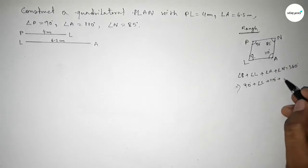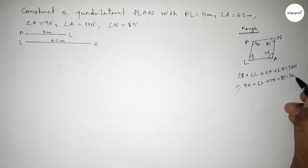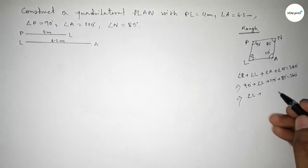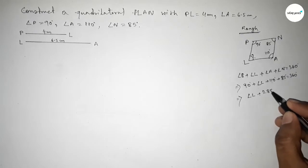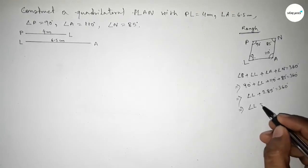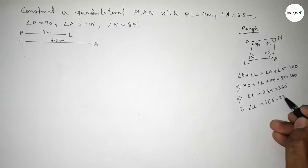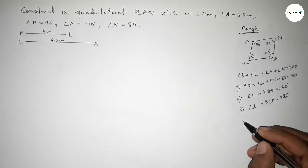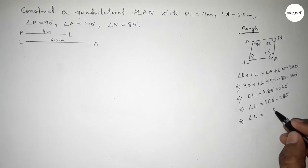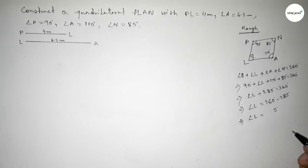The sum of all angles of a quadrilateral is 360 degrees. Putting in the values: 90 plus 110 plus 85 equals 285 degrees. So angle L plus 285 degrees equals 360 degrees. Therefore, angle L equals 360 minus 285, which gives angle L equal to 75 degrees.